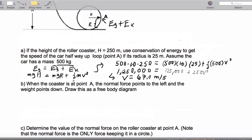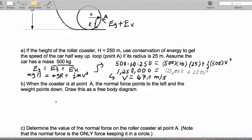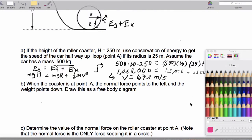All right. So when the coaster is at point A, the normal force points to the left and the weight points down. So we're going to draw this as a free body diagram. So we'll represent our coaster as a little point. You know what? I'm feeling sassy, so I'm going to use strawberry. There we go. So we have FG pointing down and we have the normal force pointing to the left.